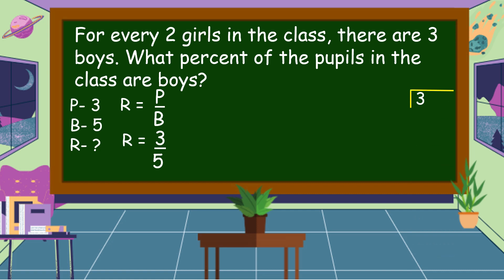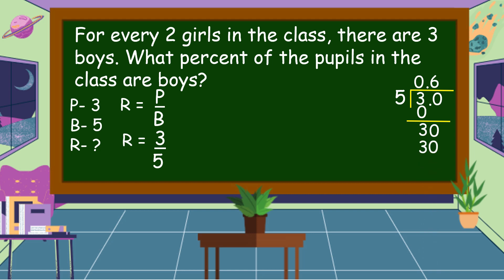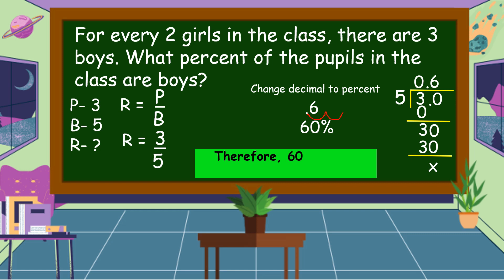We're going to find the rate. Rate is equal to percentage divided by base. Our percentage is 3 and our base is 5. Three divided by five: 3 divided by 5 is zero, zero times five is zero, three minus zero is three. We add a decimal point and zero, then bring down zero. Thirty divided by five is equal to six, so we affix the decimal point to our quotient — the answer is six tenths. Don't forget to change decimal to percent: move the decimal point two places to the right and affix the percent sign. Six tenths equals 60%. Therefore, 60% of the pupils in the class are boys.